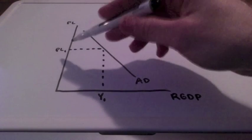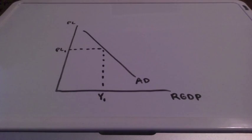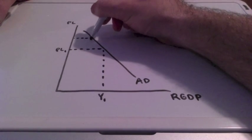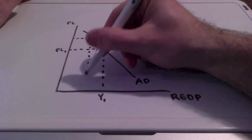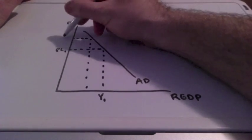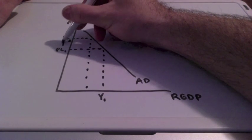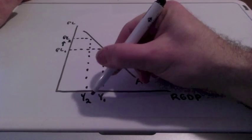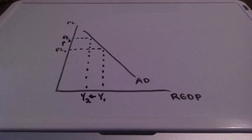We have Y and PL representing price level and GDP. When price levels increase from PL1 to PL2 you will see that there is an inverse relationship between price levels and GDP. When our price levels increase our GDP will decrease.